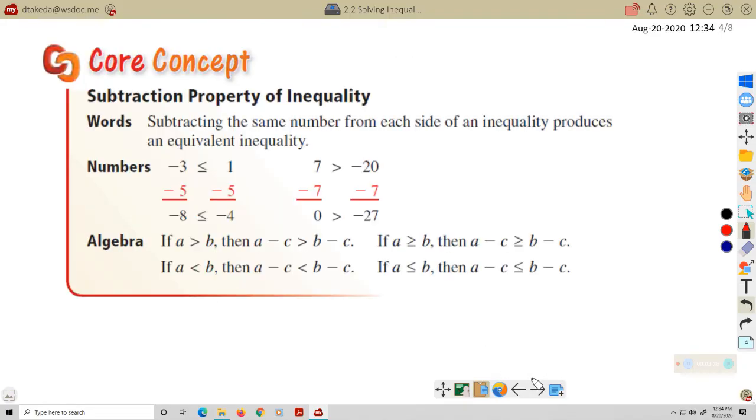All right, let's take a look at subtraction properties of inequality. Subtraction properties of inequality is just like subtraction property of equality, of equations. If I start with a true inequality, like negative 3 is less than or equal to 1. That is true. I can add the same thing to both sides and come up with a true inequality. That's just this one over here. And just like in algebra, if A is less than or equal to B, I can subtract the same thing from both sides and still come up with a true inequality. The left side will still be less than the right side.